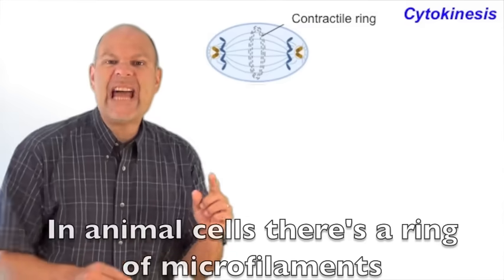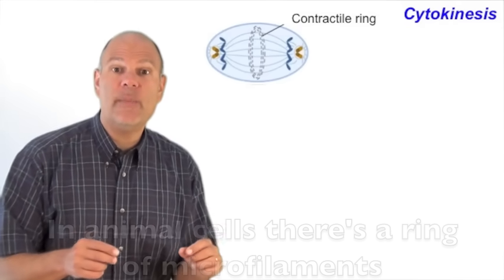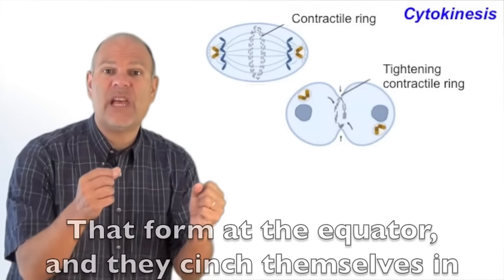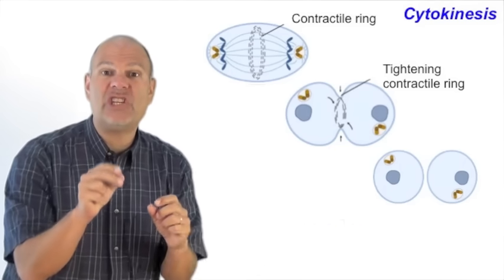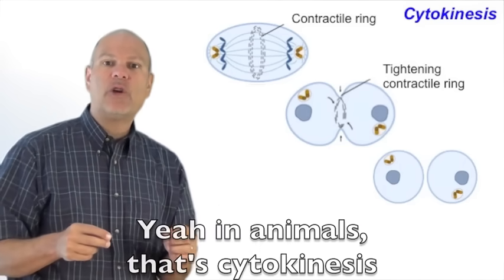In animal cells, there's a ring of microfilaments that form at the equator. And they cinch themselves in. Tighter, tighter, tighter, tighter. Till the cell is in two pieces. Yeah, in animals, that's cytokinesis.